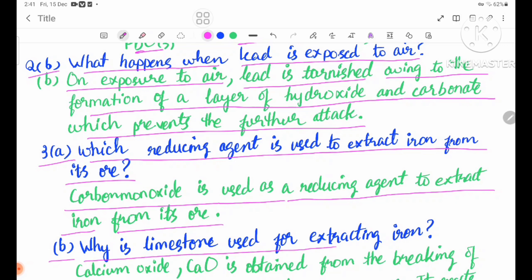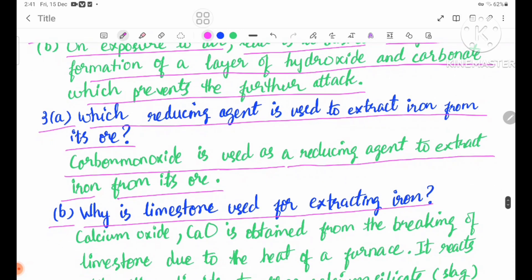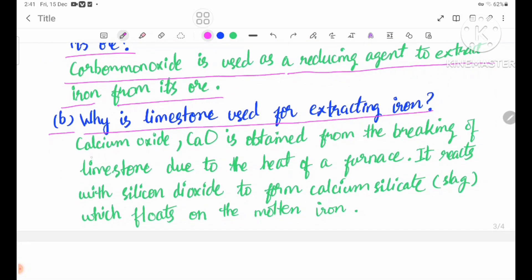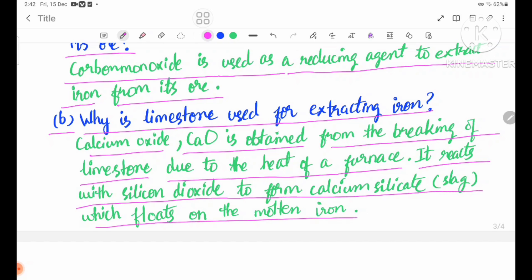Question 3B: Why is limestone used for extracting iron? Calcium oxide (CaO) is obtained from the breaking of limestone due to the heat of the furnace. It reacts with silicon dioxide to form calcium silicate slag, which floats on the molten iron.